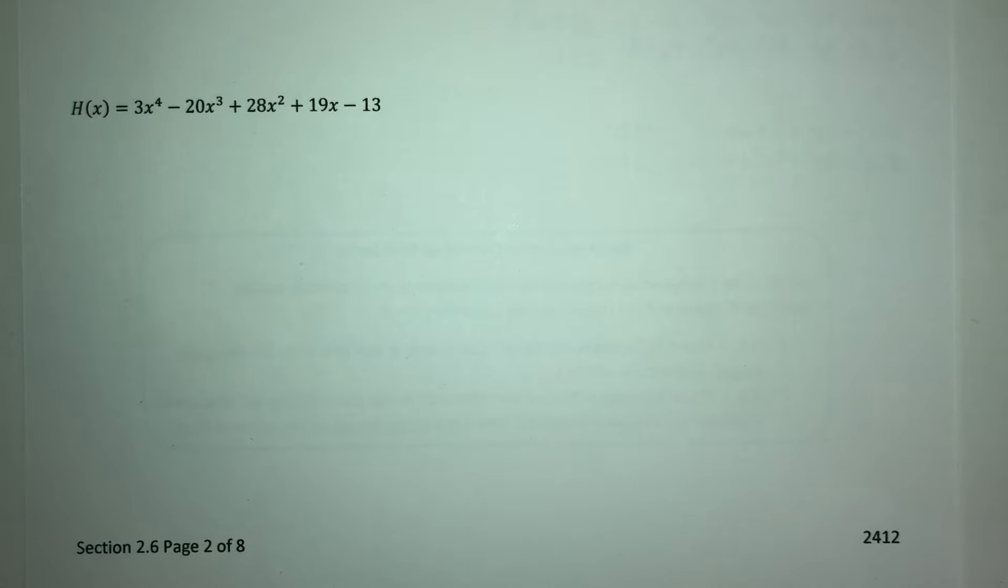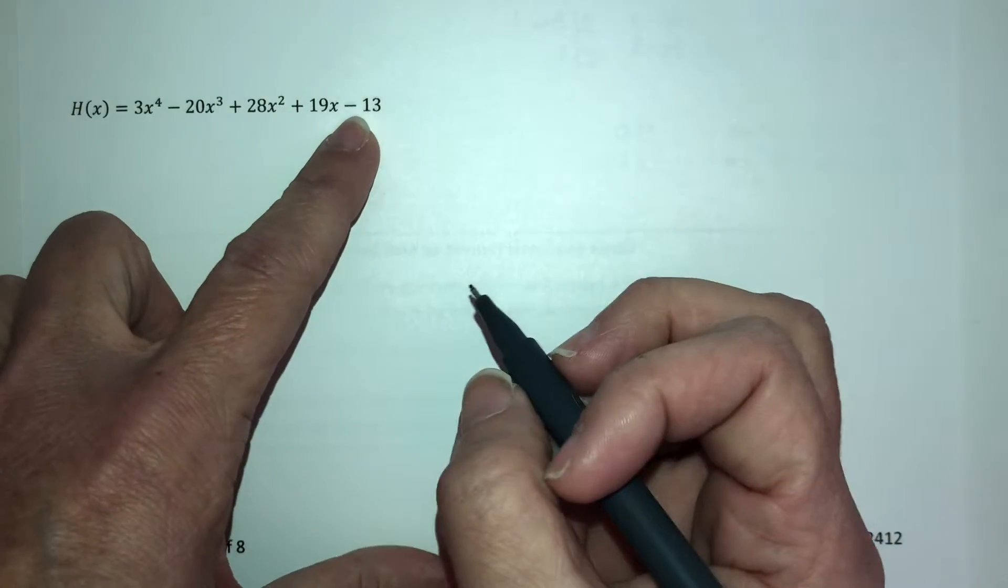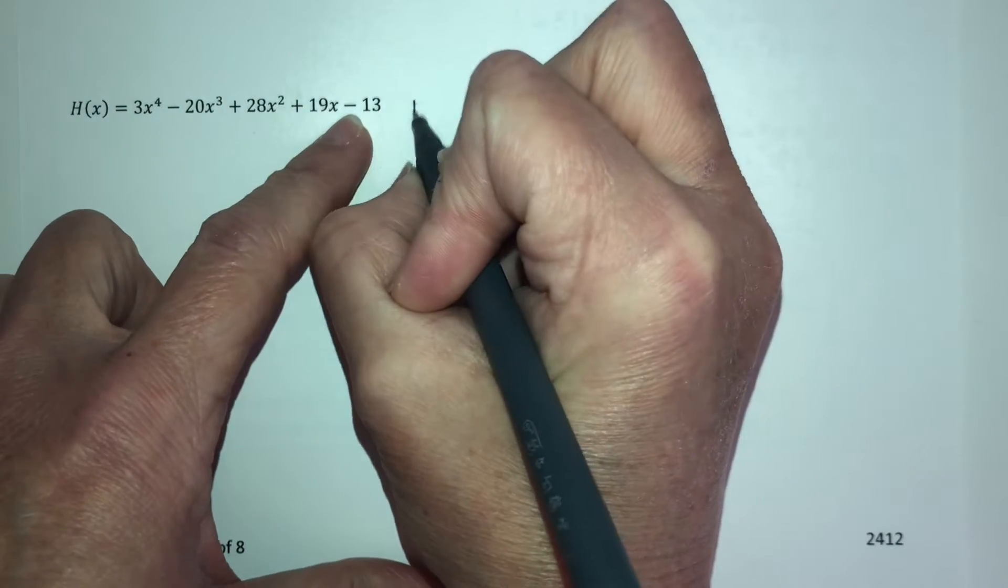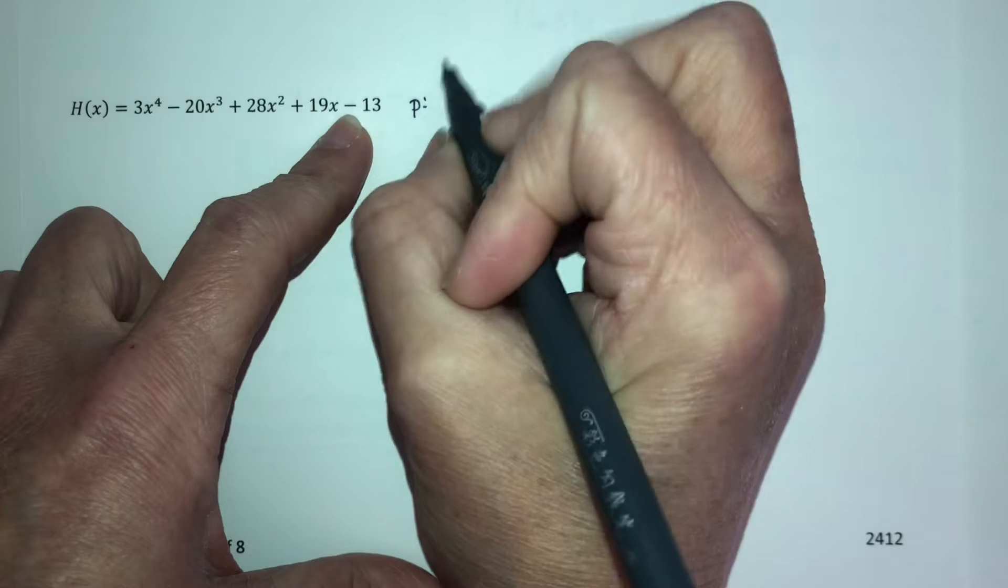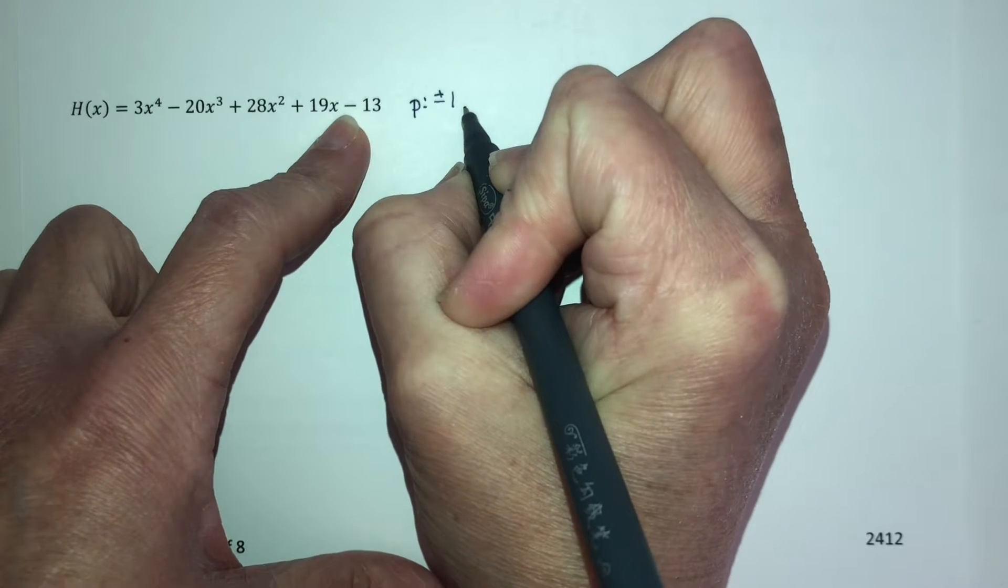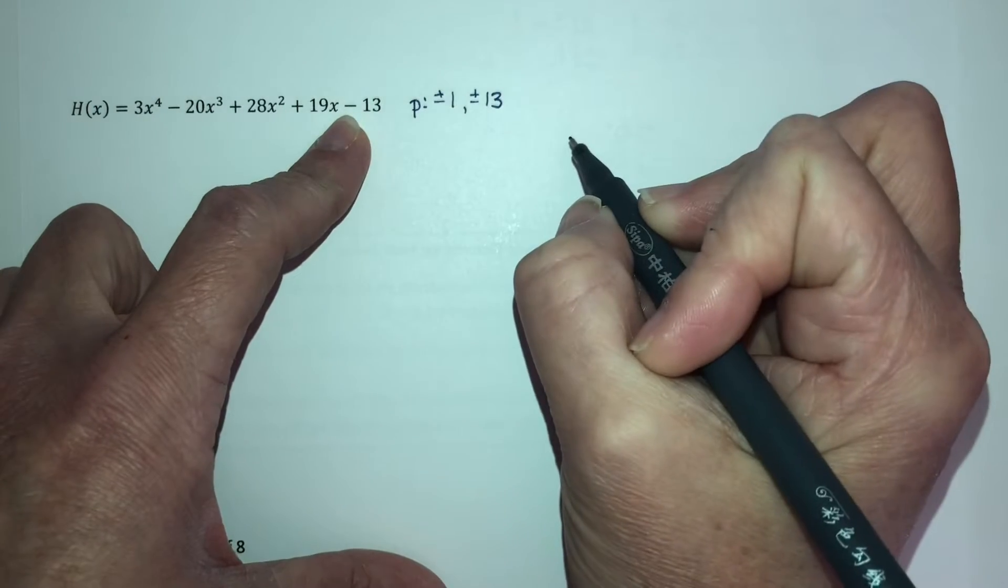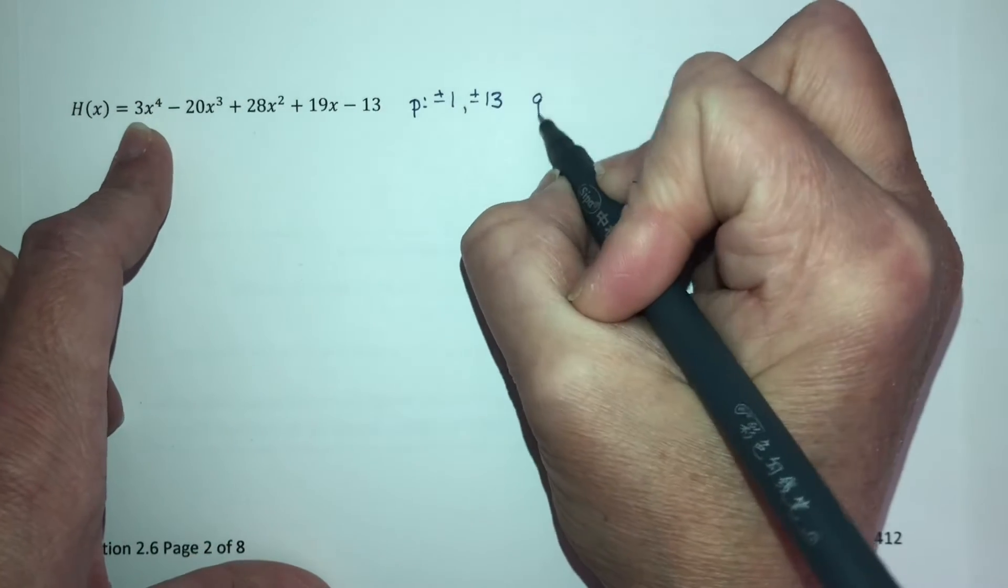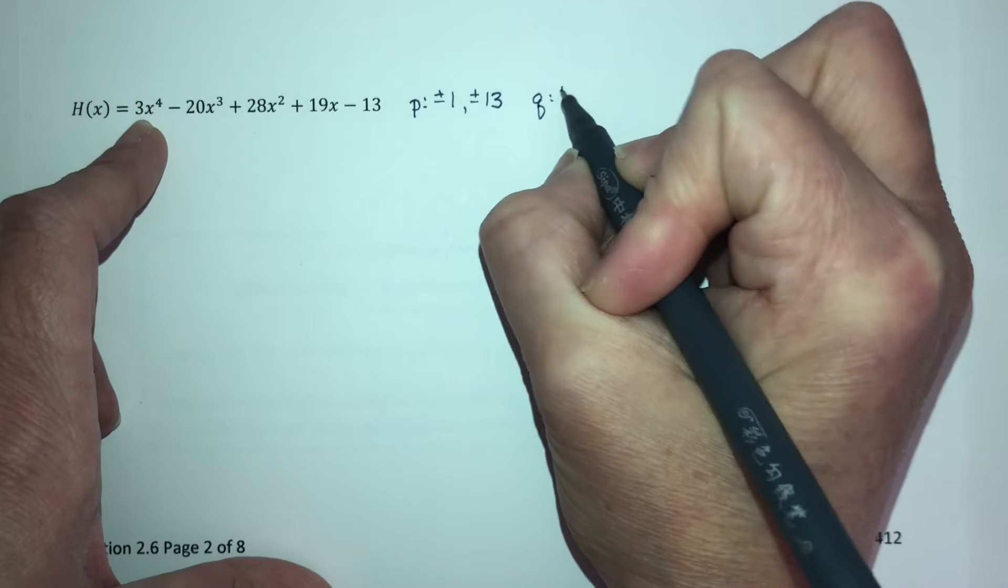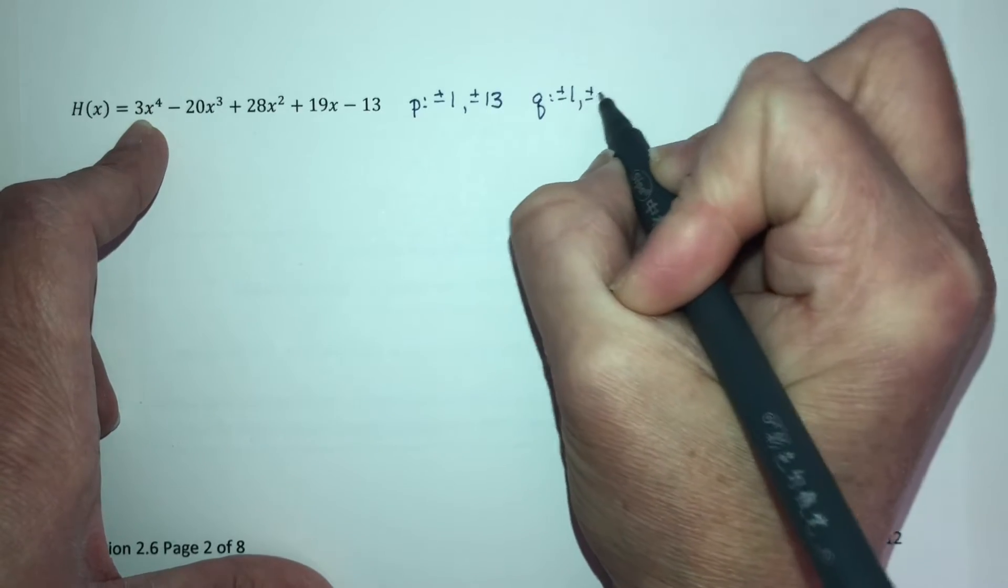This is part 2 of section 2.6. We want to find the upper and lower bounds here. We need to find our p over q values. My p values come from 13, so this is plus or minus 1, plus or minus 13. And my q values come from 3, so that's plus or minus 1, plus or minus 3.